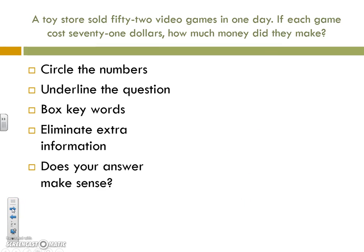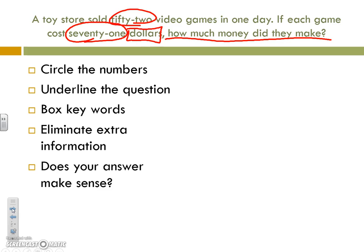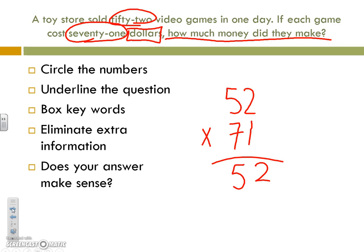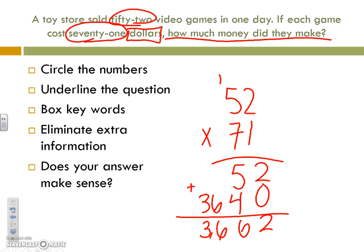Let's do one last one together. A toy store sold 52 video games in 1 day. If each game costs $71, how much money did they make? We know we want to find out how much money they made — the amount of dollars. So we are going to do 52 times 71. 1 times 2 gives you 2; 1 times 5 gives you 5. Drop your 0. 7 times 2 is 14 — carry your 1, drop your 4. 7 times 5 gives you 35; plus the 1 gives you 36. When you add your partial products together, you are left with 3,662.